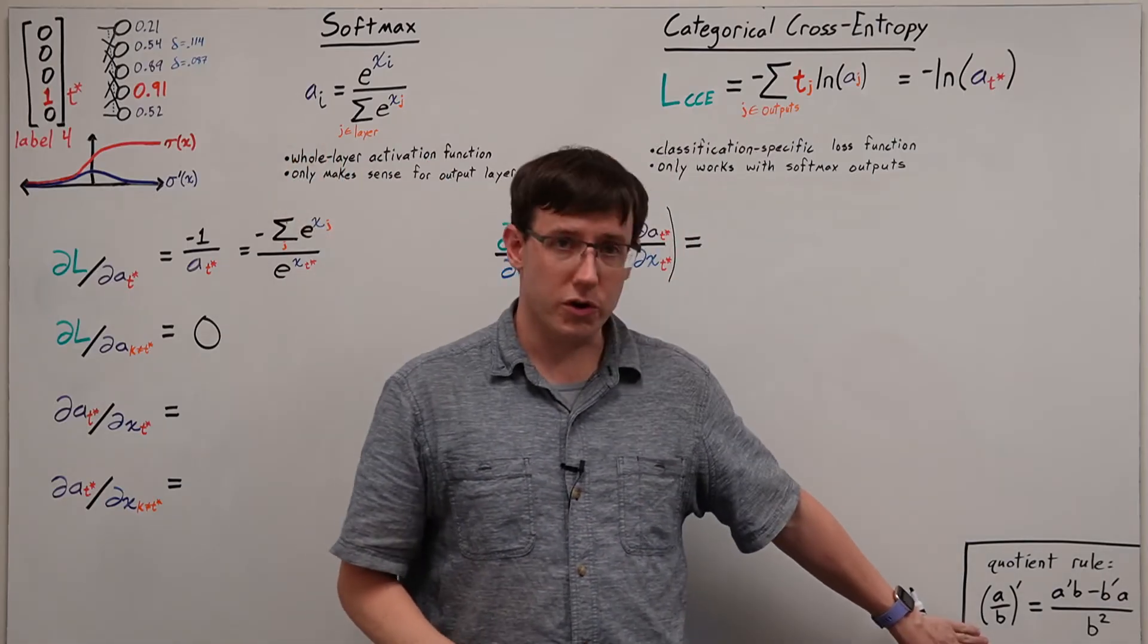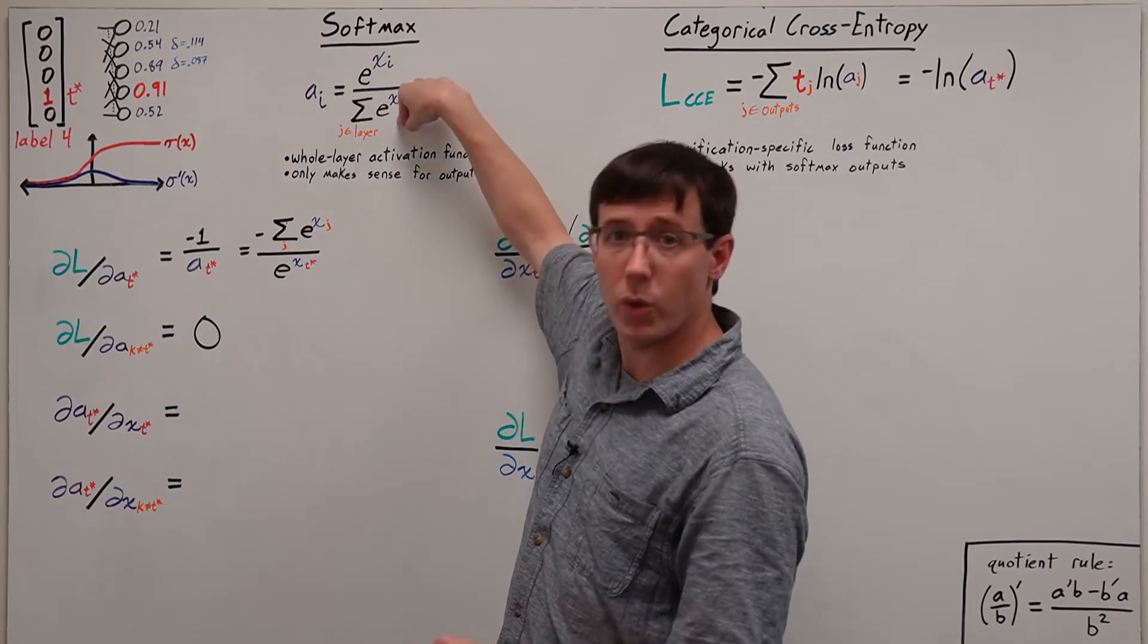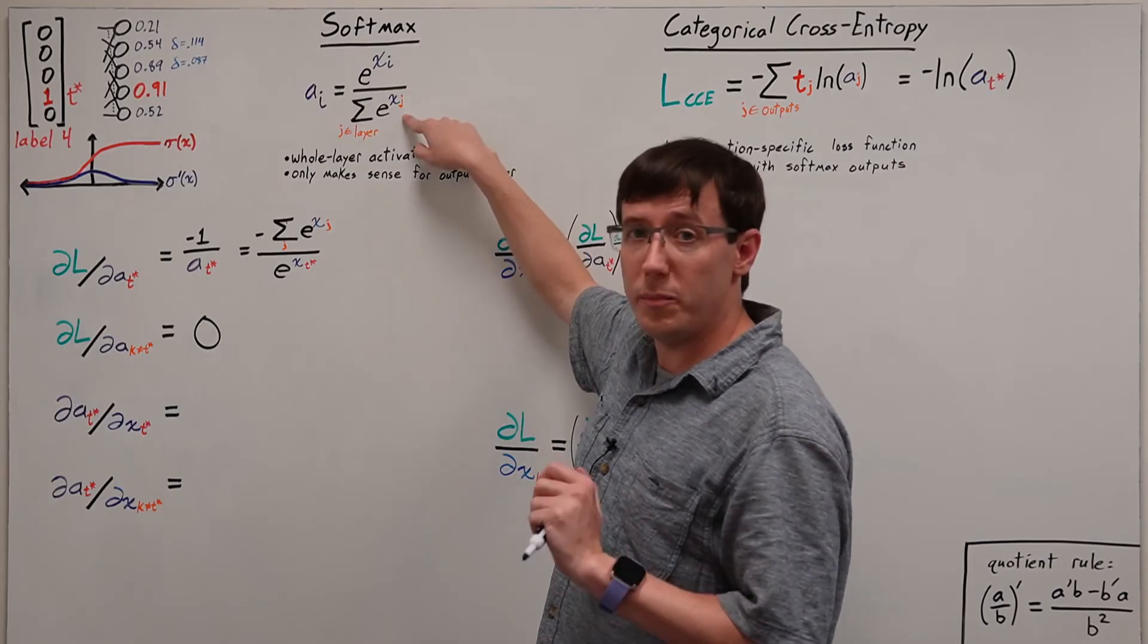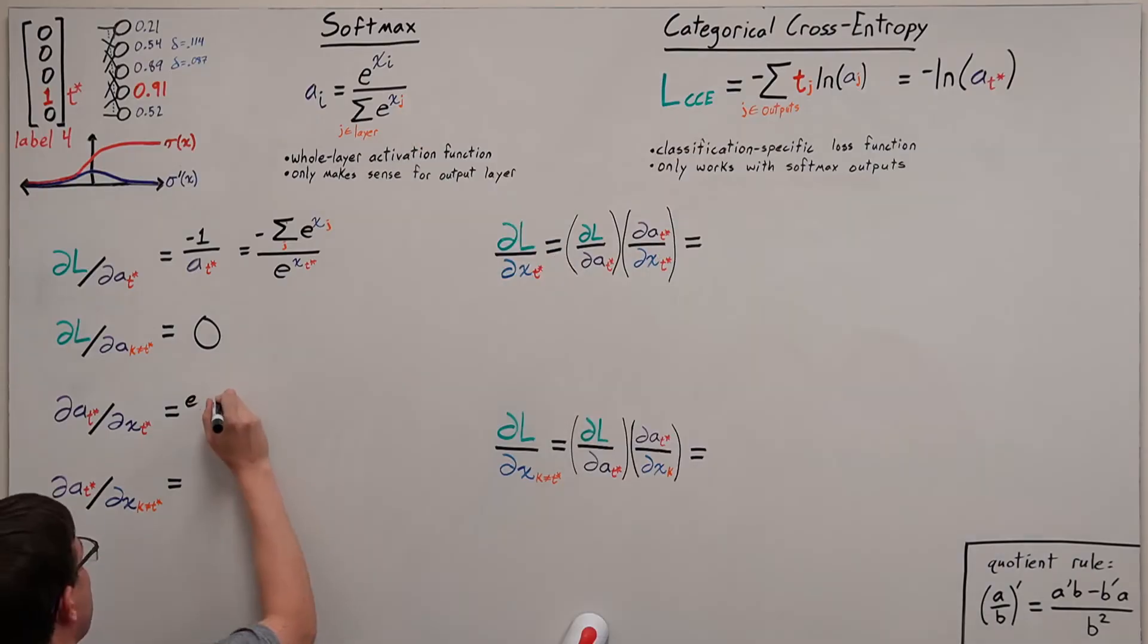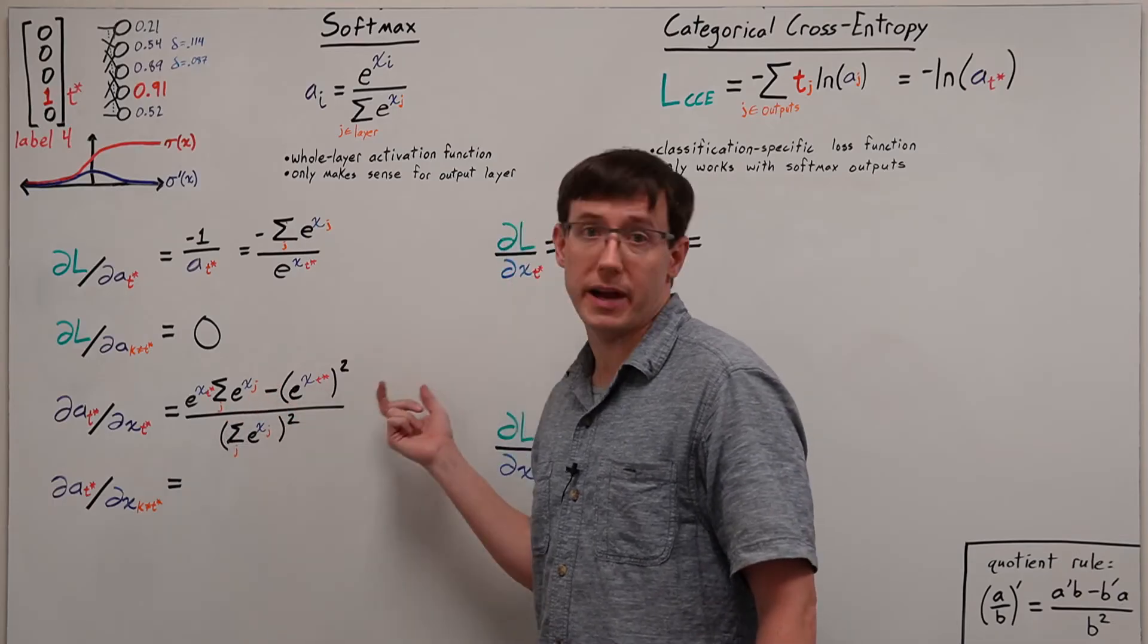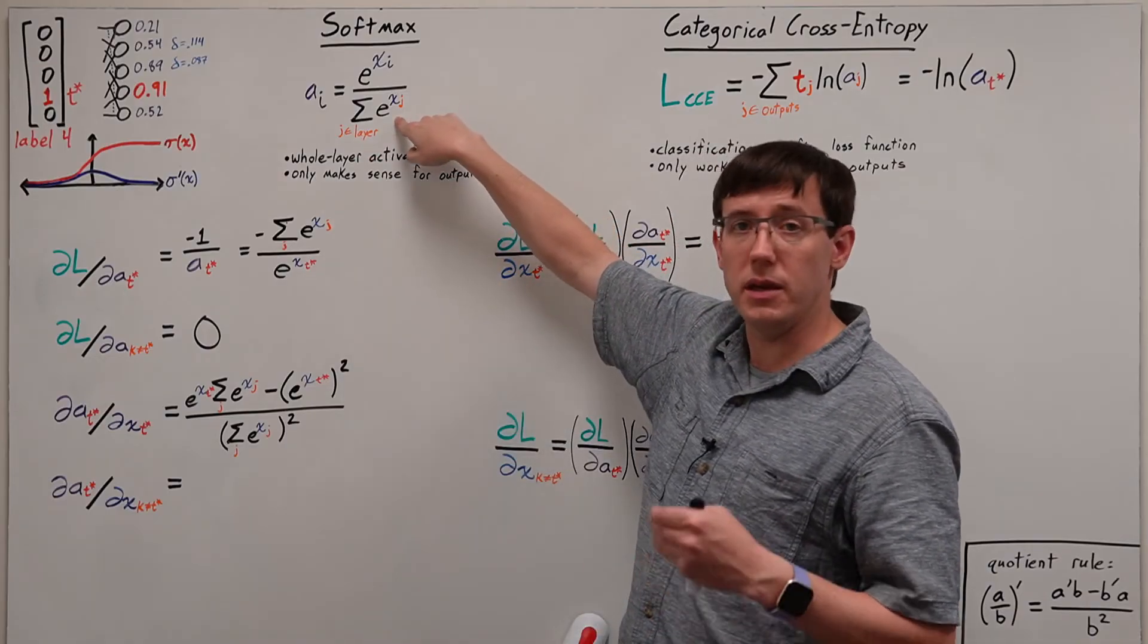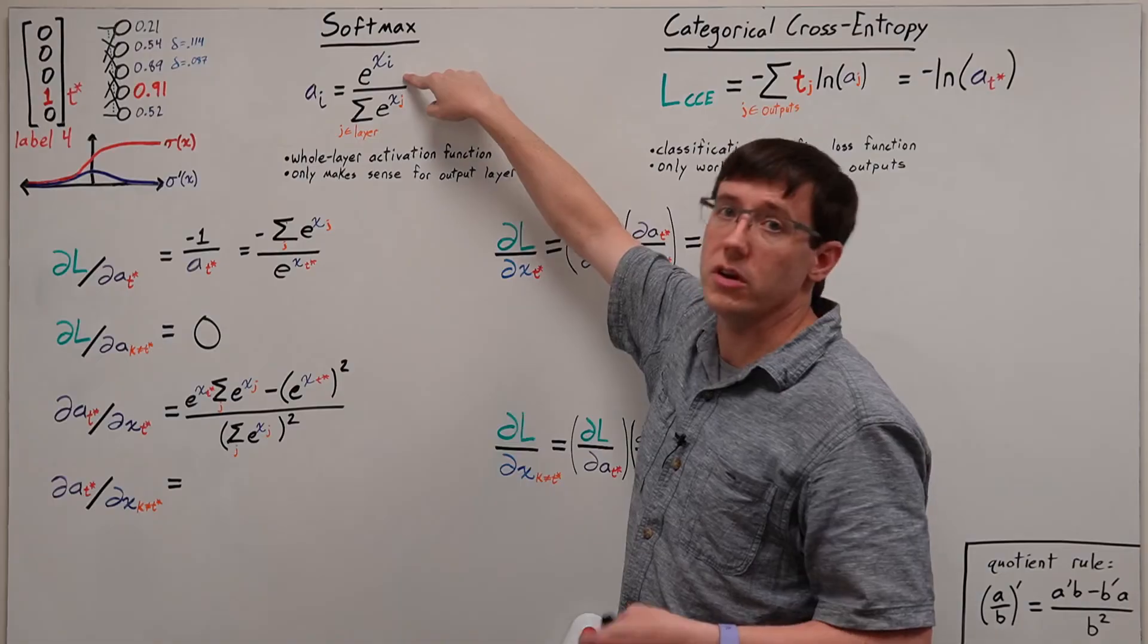For this derivative we need to apply the quotient rule. So the derivative of this quotient is a prime b minus b prime a over b squared. Where a prime means the derivative of e to the xi with respect to xi, while b prime means the derivative of this sum with respect to xi that appears in one of its terms. And of note, both terms on the top have an e to the xt star that we can factor out. For some other node k, the derivative of the sum will still be e to the xk, but the derivative of the top will now be zero because this is a constant with respect to xk.